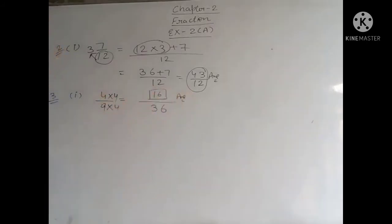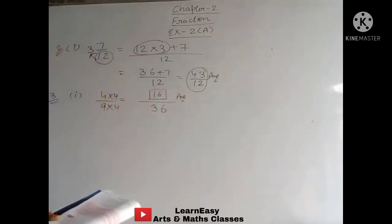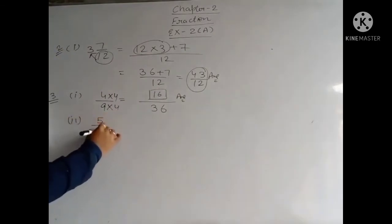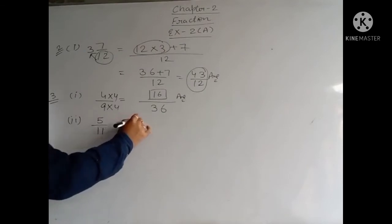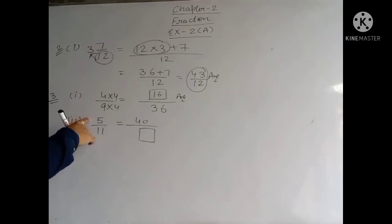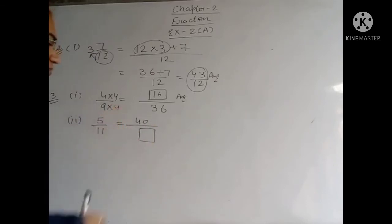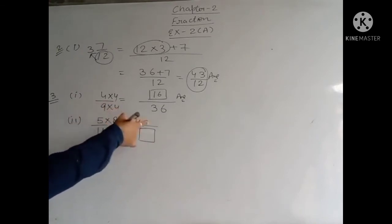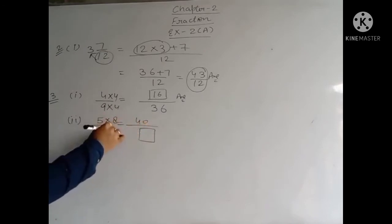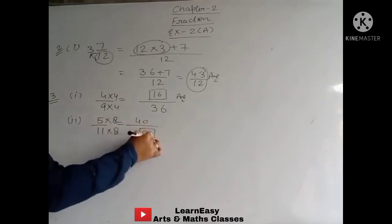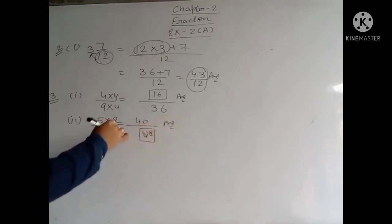Part number 2: 5 upon 11 equals 40 upon dash. Here the numerator increases from 5 to 40. Since the number is increasing, we multiply. 5 times 8 is 40, so we are multiplying by 8. In the denominator also, we multiply by 8. 11 times 8 is 88. So the answer is 5 upon 11 equals 40 upon 88.